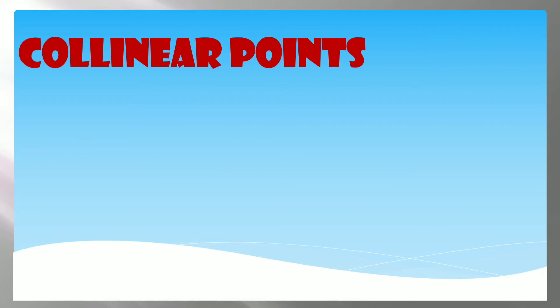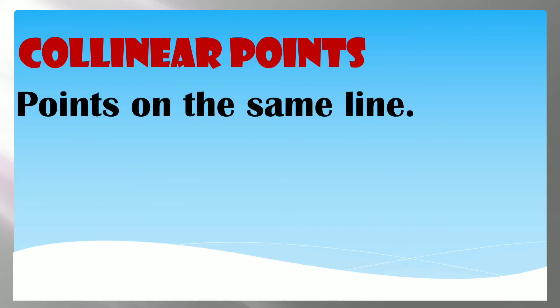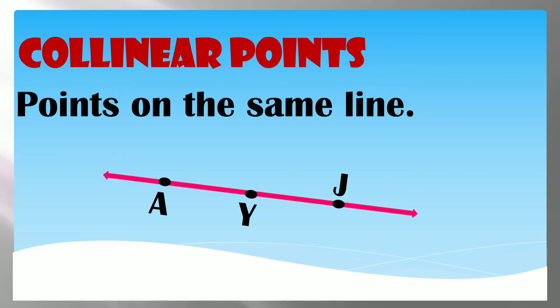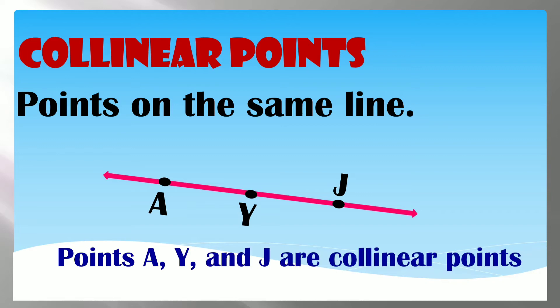Collinear Points are points on the same line. When points are aligned on a line, we call them collinear points. For example, points A, Y, and G are collinear points because they are on the same line.